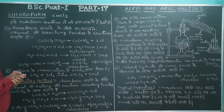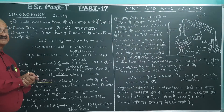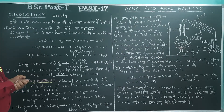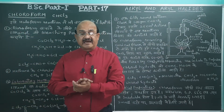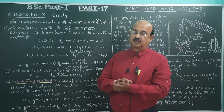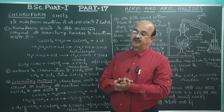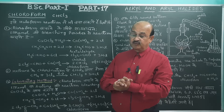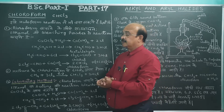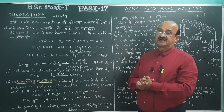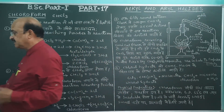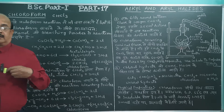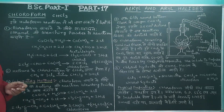This is part of trihalogen derivatives. The example of trihalogen derivatives I explained in Part 16 — how trihalogen derivatives are formed. Chloroform, bromoform, and iodoform — we saw their formulas. Now I am starting with the individual members, beginning with chloroform.